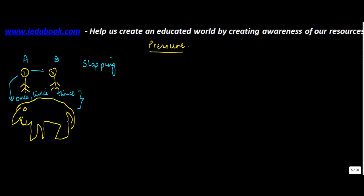Now this person A goes to B and slaps him on his face. This might be a slightly violent example, but it's needed to explain certain concepts — please don't try this with anyone. Immediately, A notices that B falls down.